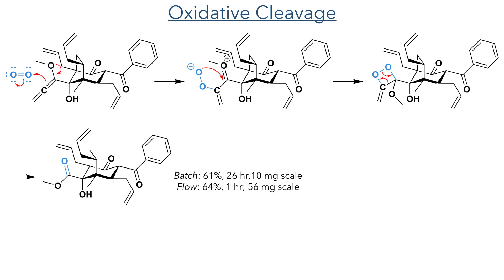They pressed on with this compound and subjected it to an oxidative cleavage using singlet oxygen. This acts as an electrophile and is attacked by the alene, forming a peroxide intermediate which then attacks the carbonyl, forming a five-membered peroxide bridge. This then fragments, forming the target methyl ester and the elimination of ethenone. This reaction proved to be troublesome as it required a long reaction time of 26 hours to produce a 61% yield when carried out on the 10 mg scale. Attempts to increase the batch size proved difficult, so instead they utilized flow chemistry and were able to obtain the product in a 64% yield in just one hour on the 56 mg scale.